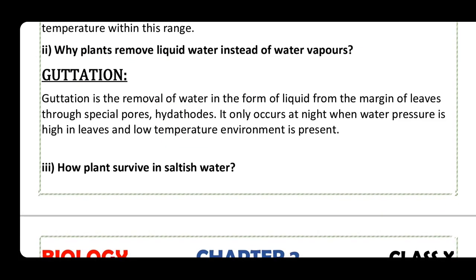Why do plants remove liquid water instead of water vapor? Guttation is the removal of water in the form of liquid from the margin of leaves through special pores called hydathodes. It only occurs at night when water pressure is high in leaves and a low temperature environment is present outside, causing water to come out in liquid form through hydathodes. The removal of water as vapor is called transpiration, which occurs throughout the day.